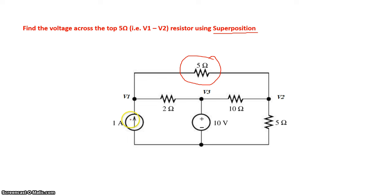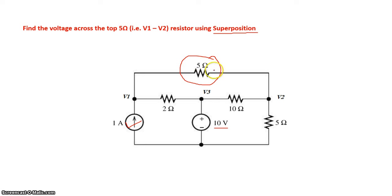We will first try this by setting the current source to zero and looking at the effect of the 10 volt source on the 5 ohm resistor. Then we will set the voltage source to zero and look at the effect of the 1 amp current source on this 5 ohm resistor and calculate the voltage. The principle of superposition says that the voltage drop because of the 10 volts and the voltage drop because of the 1 amp combine together to form the total voltage drop across the 5 ohm resistor.